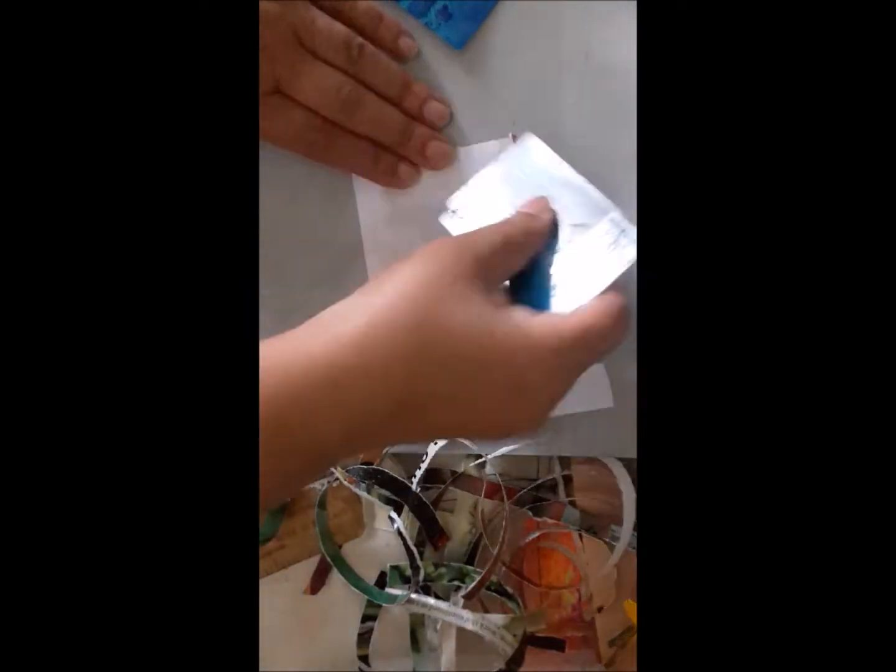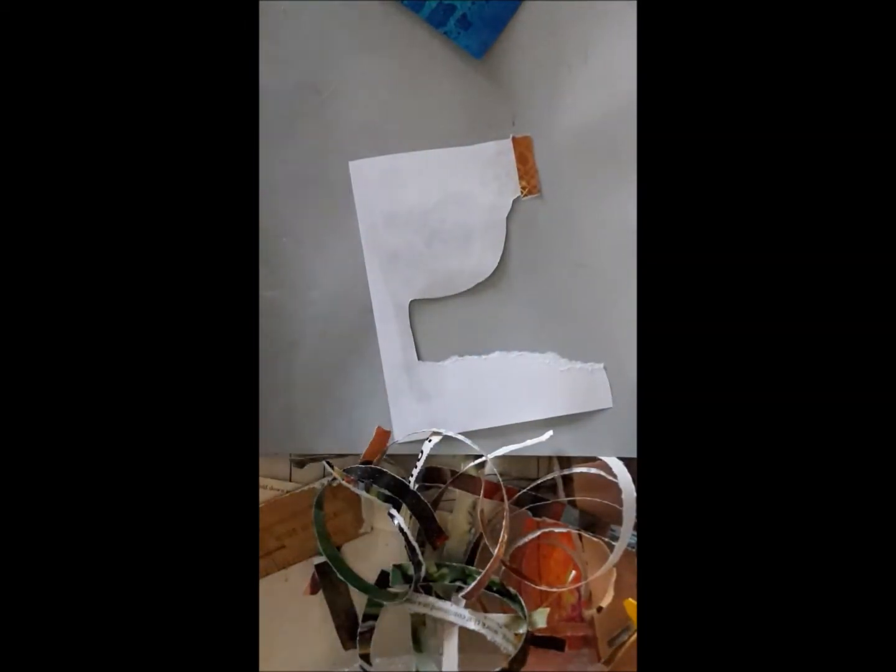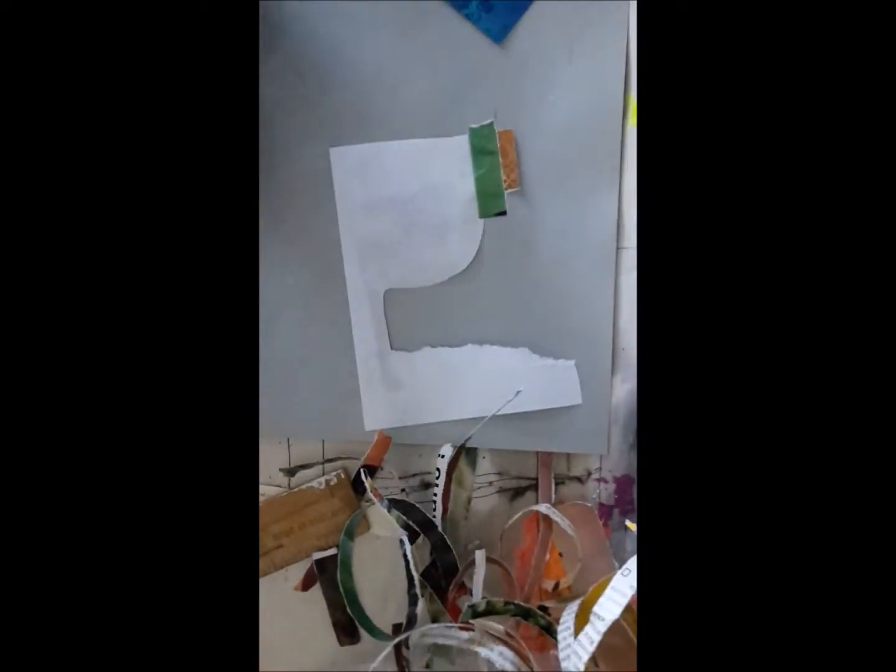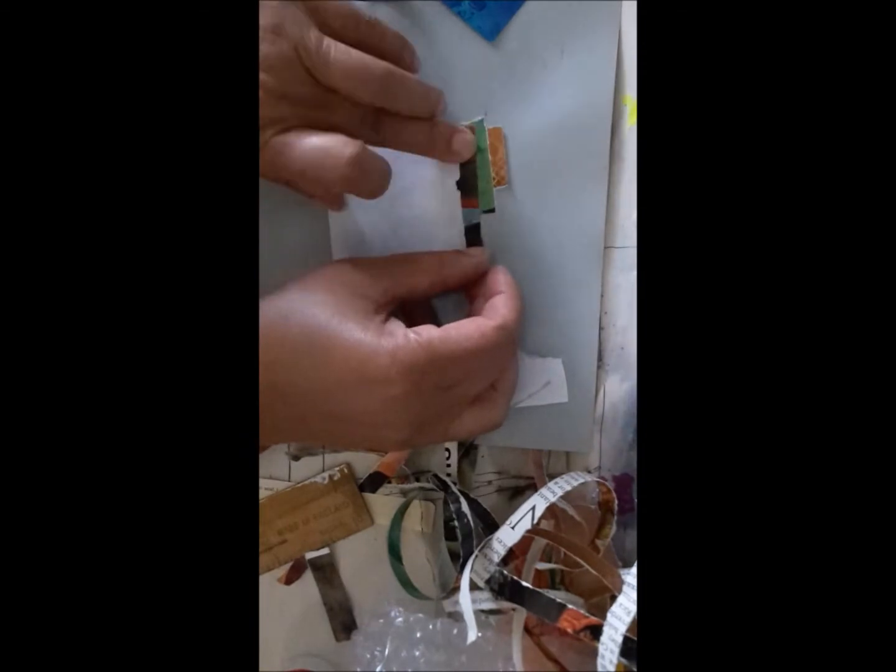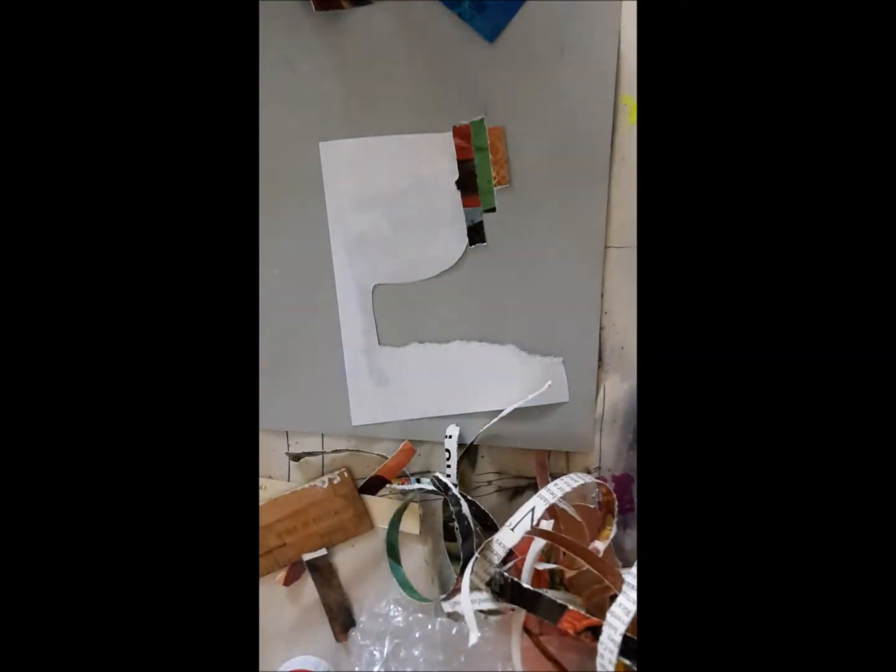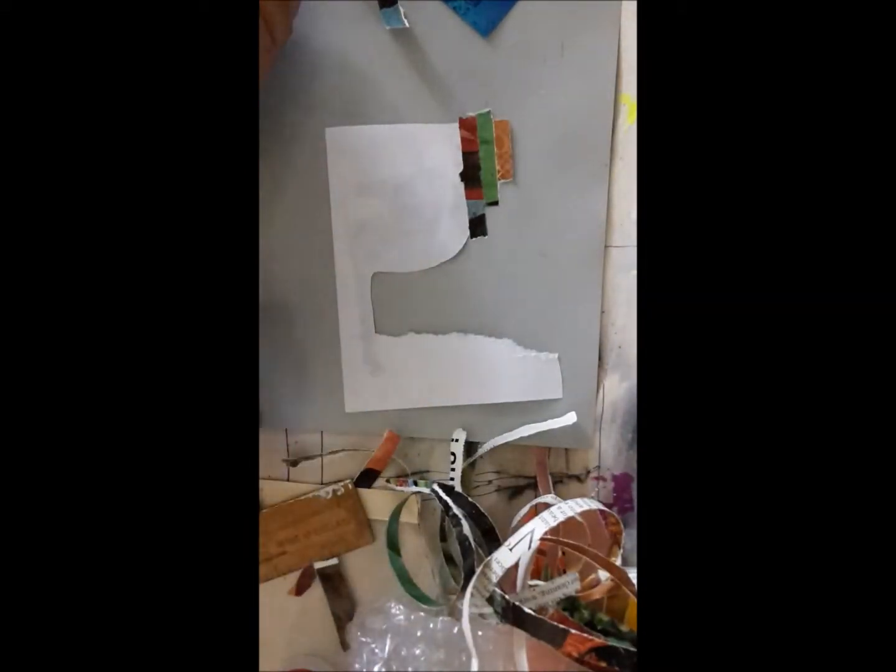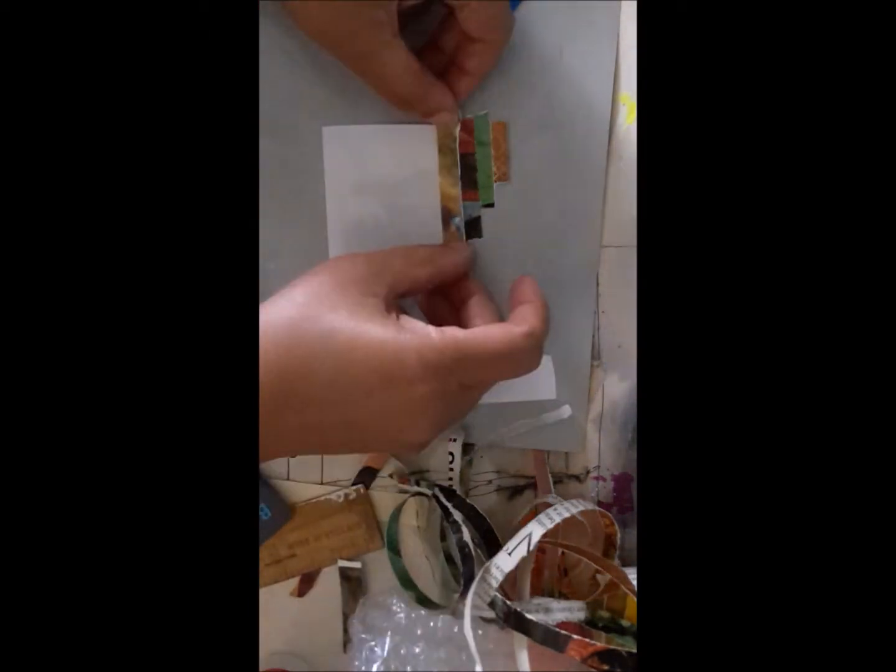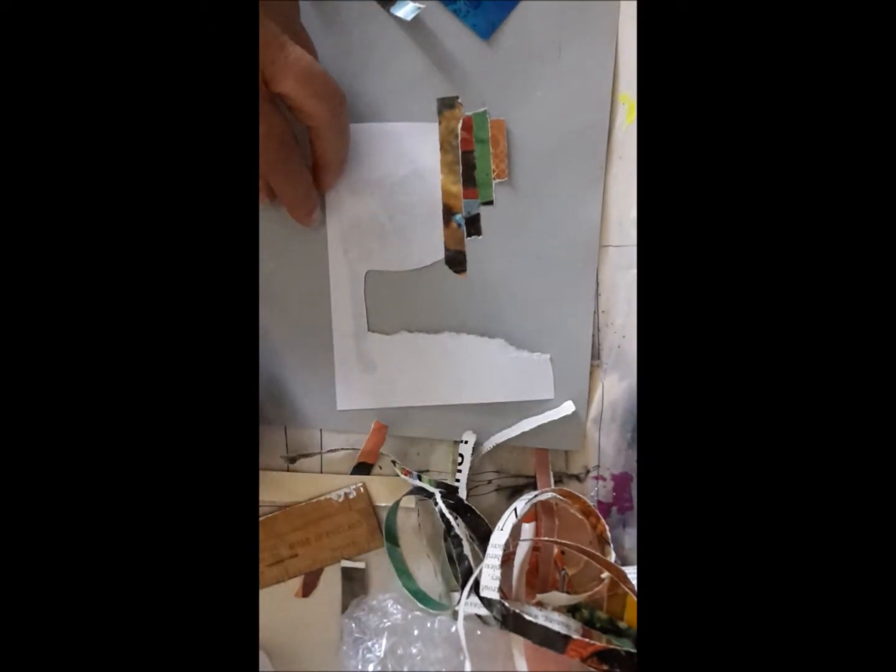Now I'm using glue stick to stick the ripped paper, and I'm just using the credit card to make sure that's properly glued to the paper with no bubbles. I'm in the living room.